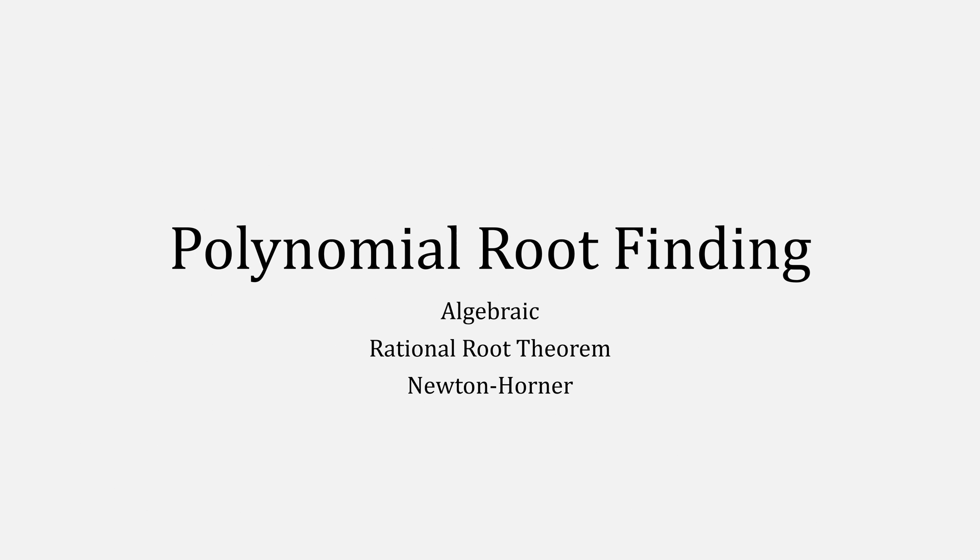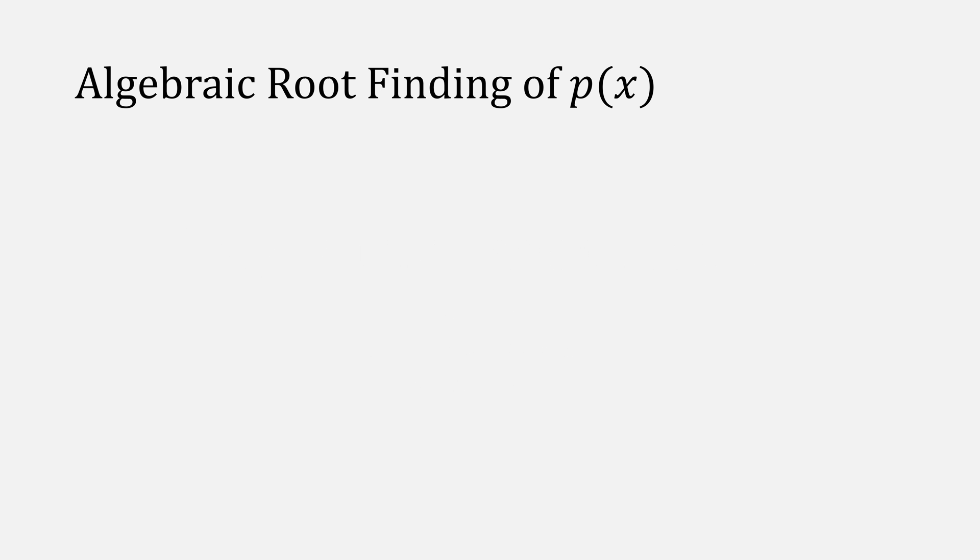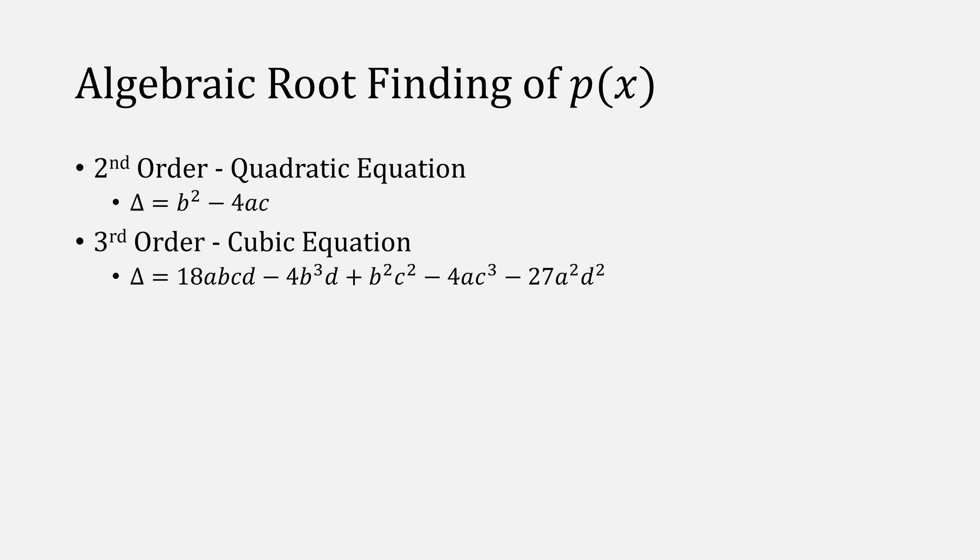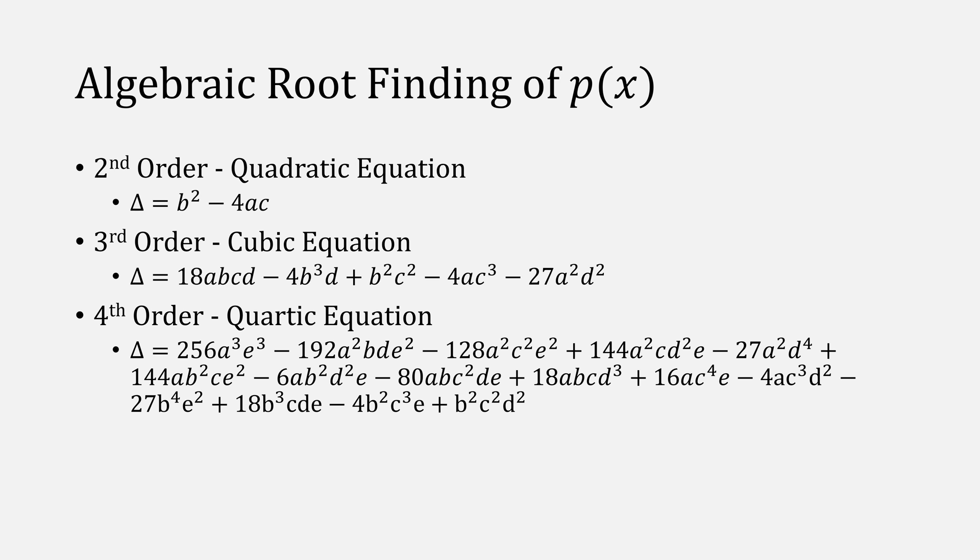Using what we know now, let's talk about finding the roots of polynomials in three different ways, the algebraic way, the rational root theorem, and using Newton's method. The algebraic way is quite simple, and you've probably done it. If our polynomial is second order, we can use the quadratic equation. If it's third order, we can use the cubic equation, which has a little bit longer discriminant. If it's fourth order, the discriminant becomes a lot longer, and if it's fifth order, there actually isn't an algebraic way to solve it. This is actually proved by the Abel-Ruffini theorem.